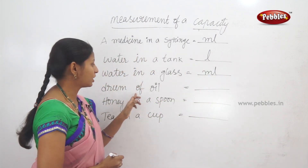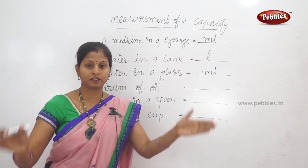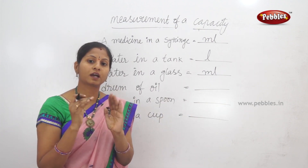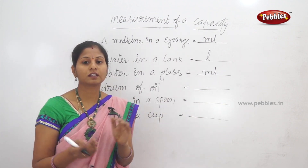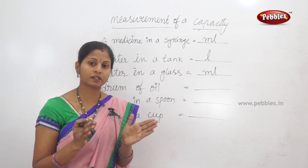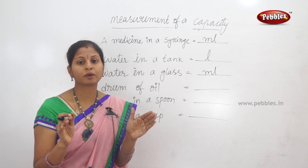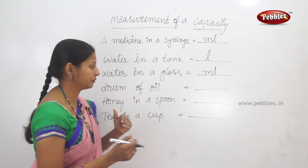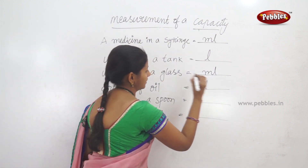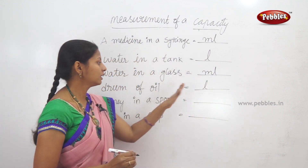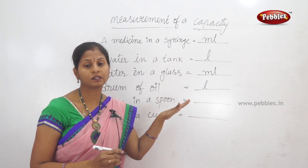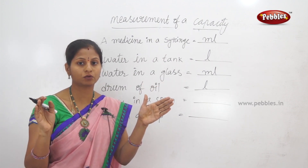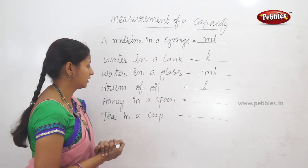So, a drum of oil — I use a little bit of oil. So it is equal quantity or more quantity. We see that a drum of oil can have 20 L of oil or 50 L of oil.